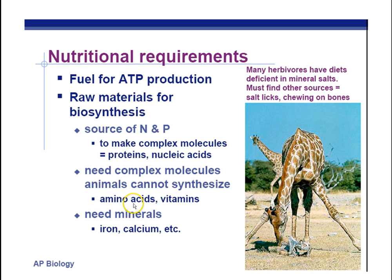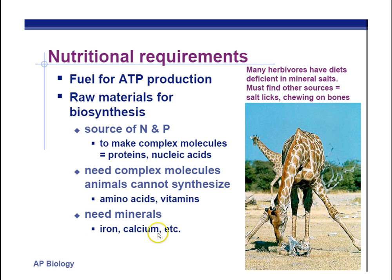We also need some complex molecules that animals cannot synthesize, like certain amino acids. There are some amino acids and vitamins that we can't make. And we need some minerals for things like our hemoglobin — we need iron for that to fold properly — and calcium, et cetera.